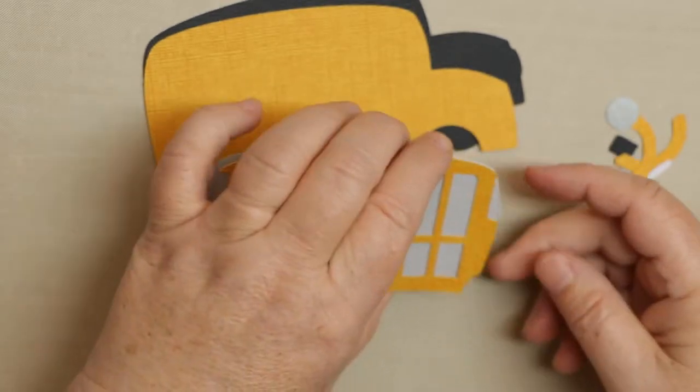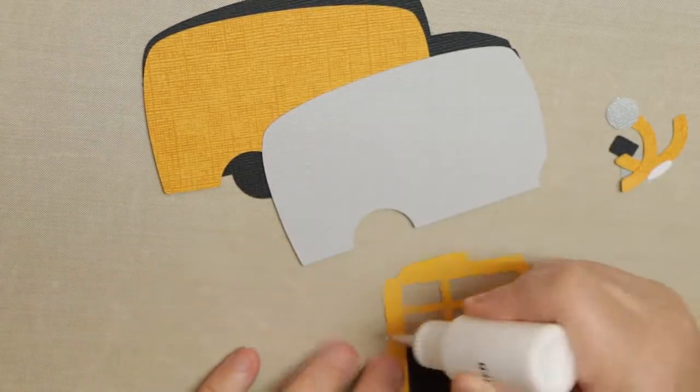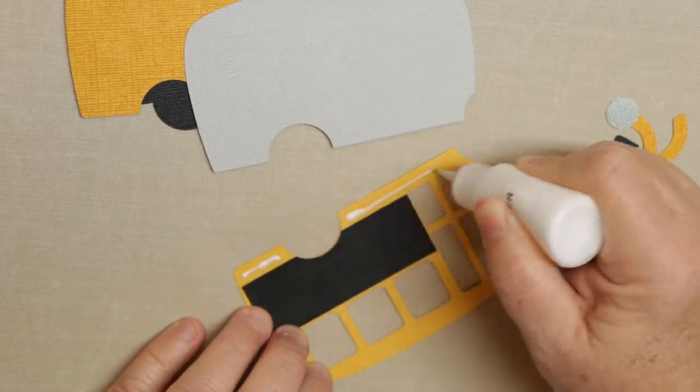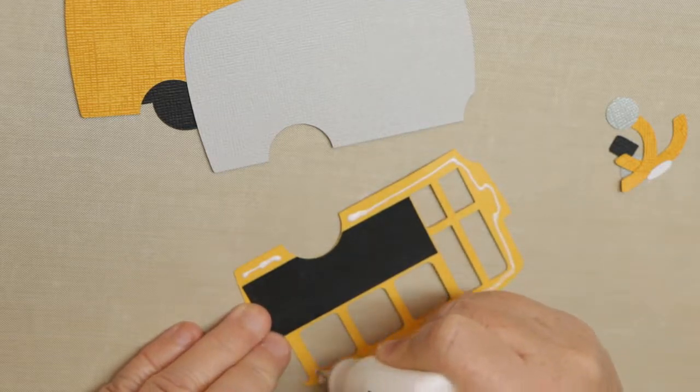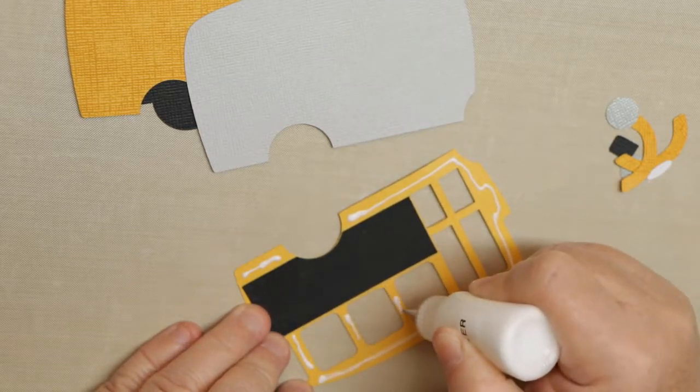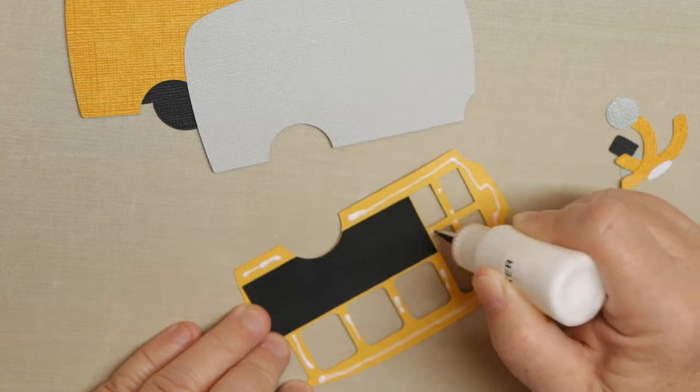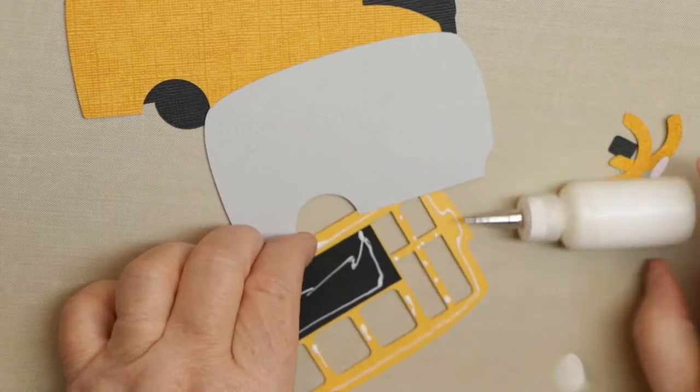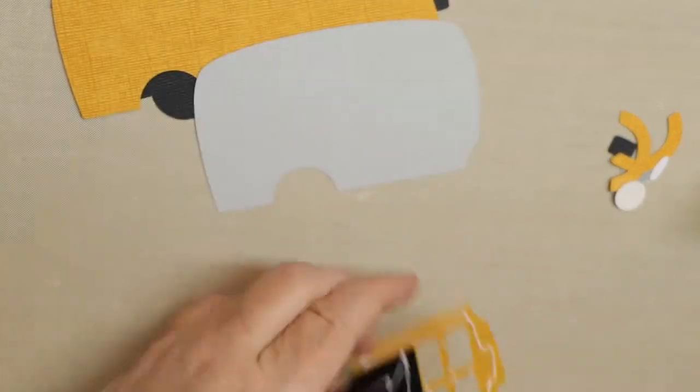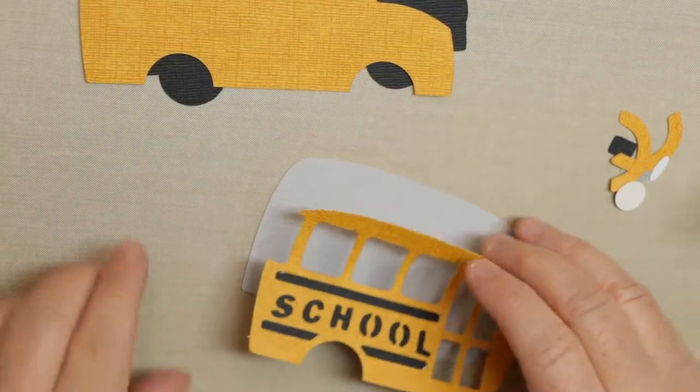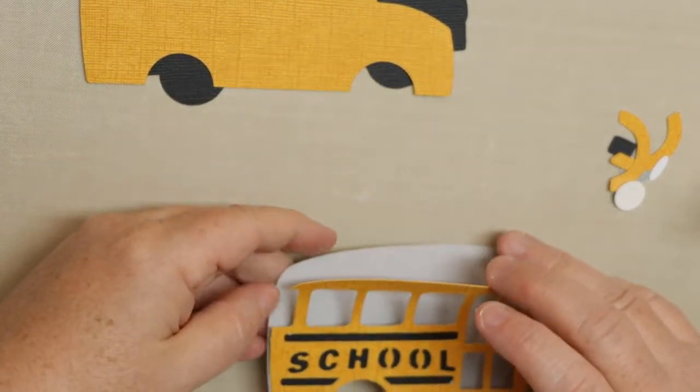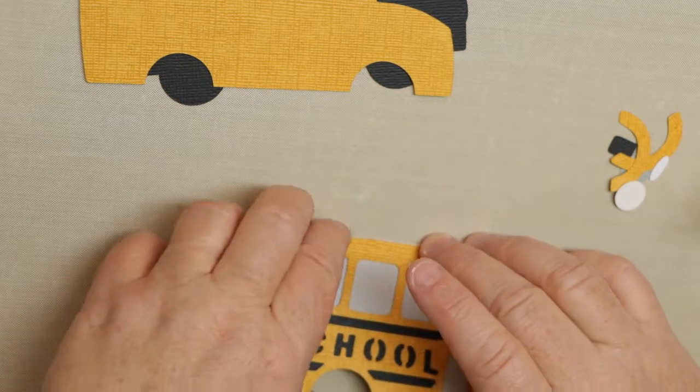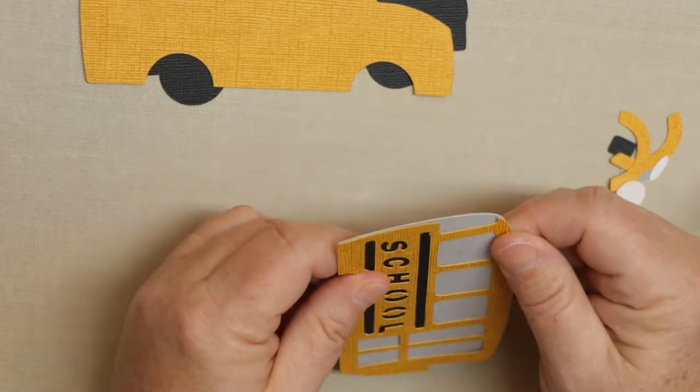Most glue, at least the ones I use, dry clear. So if a little bit shows through it's not a big deal. Then we're just going to add glue around these frame pieces to glue it onto the gray section and we're going to line it up. I always start at the bottom for this or the top but I'm going to line up where the tire cutout is and then just lightly place it down and then make sure that my edges match up.